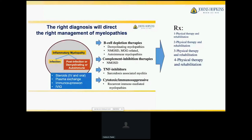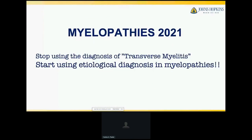Don't forget that it's not only about medications like B-cell therapies — like Rituximab, Ocrelizumab, or newer medications introduced in recent years — or complement inhibition therapies for NMO, or TNF-receptor inhibitors. We need to associate those drugs with strategies involving physical therapy, rehabilitation, and most importantly, resilience — and a very good vitamin P. Please stop using the diagnosis of transverse myelopathy. Let's start identifying the cause of the myelopathy before establishing a better treatment for patients affected by myelopathies. Thank you very much for your attention.